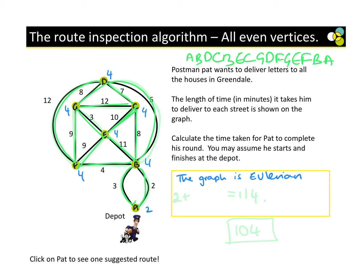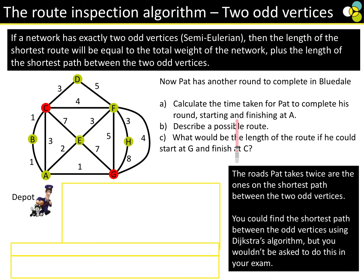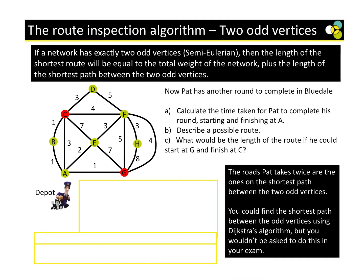Now let's look at what happens when we don't have all even vertices. Step one: write down the order of each node. We have two odd nodes — C and G. Step one is to highlight your odd nodes.